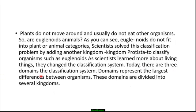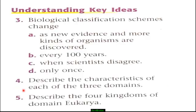As scientists learn more about living things, they change the classification system. Today there are three domains. The classification system's domains represent the largest difference between organisms, and these domains are divided into several kingdoms.